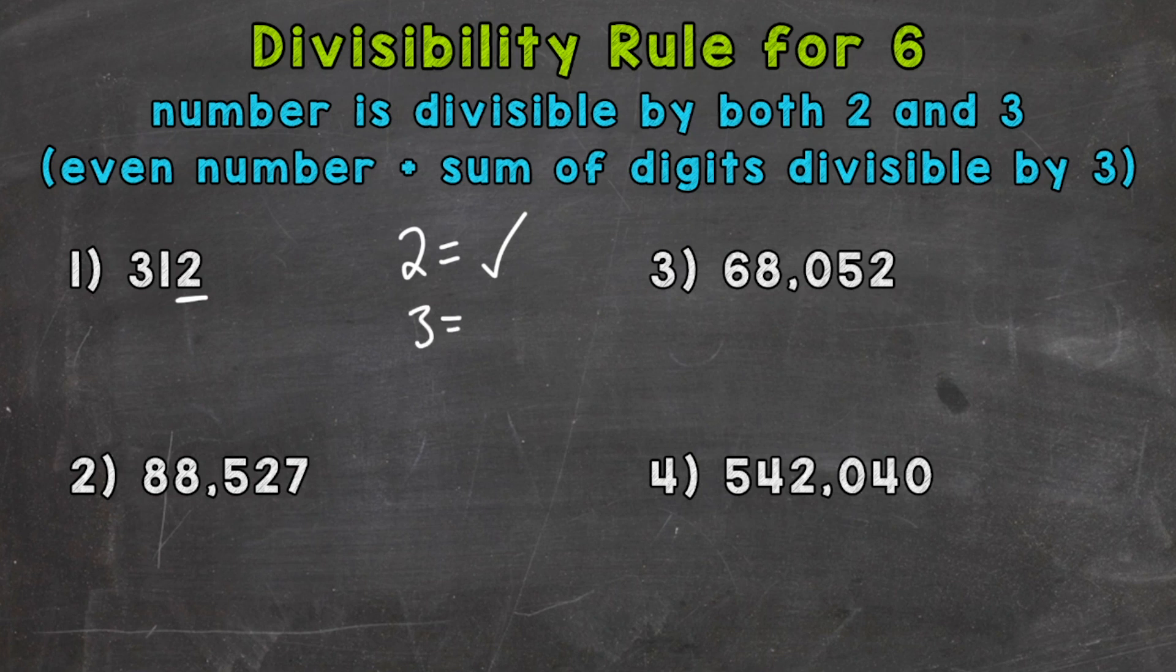Let's check 3 now. So we need to find the sum of the digits, and if that sum is divisible by 3, then the original number is divisible by 3. So we'll add 3 plus 1 plus 2. 3 plus 1 is 4, plus 2 is 6. So is 6 divisible by 3? Can we do 6 divided by 3 and get an answer without a remainder? We get 2.